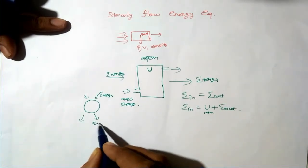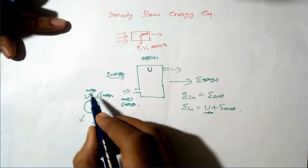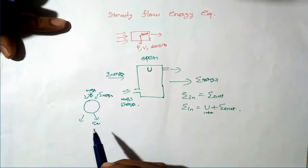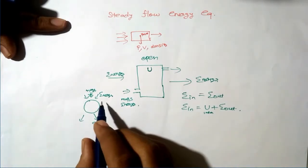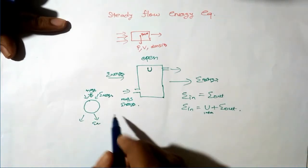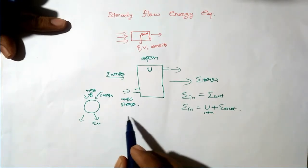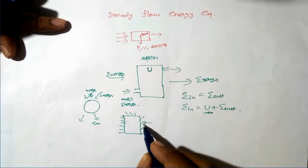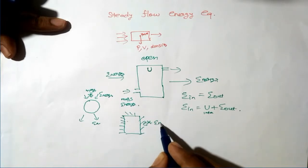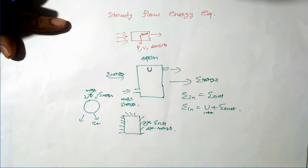In a closed system, mass cannot go into or come out of the system — the mass inside remains always the same. There is another type of system known as an isolated system, where both energy and mass cannot enter or come out of the system.